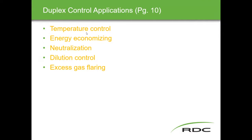Where do we use duplex control? Applications include: temperature control, energy economizing, neutralization — a really popular one — dilution control (e.g., pulp and paper for getting pulp to the right consistency), pollution control, and excess gas flaring, which covers your standard gas separator scenario where you're separating gas and liquid and need to handle excess gas.